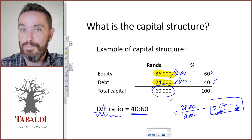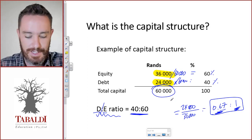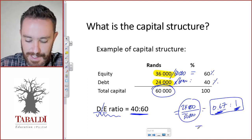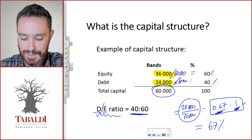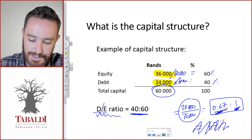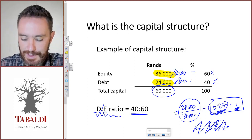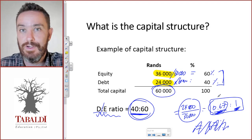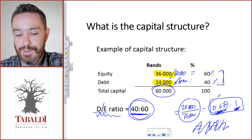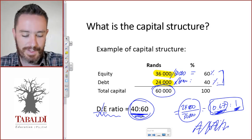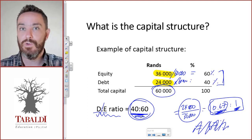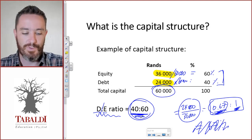That means 40% of the total funds are debt and 60% are equity. You can also simply divide debt by equity and write it as 67%, but it's better to express it either as 'for every one rand of equity, how much debt' — something to one — or as a ratio where the two figures add up to 100, like 40:60. That is probably the safest format when asked to determine the capital structure. The key takeaway is to understand that capital structure refers to how long-term assets are funded and what the proportions of debt versus equity are.